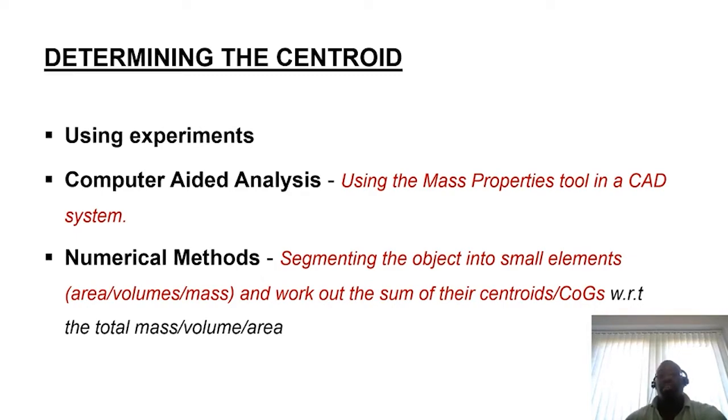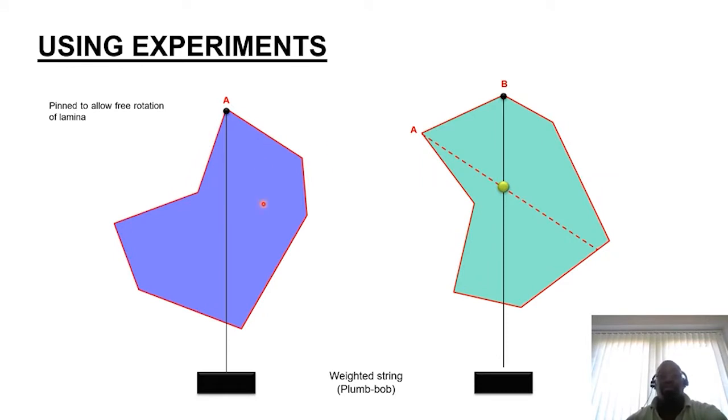So let's look at using experiments. The experiment is fairly simple for this laminar or 2D form. All that we have to do is pin a defined position, typically one corner. You can label that corner A or 1 or 2. You allow the shape to oscillate until it comes to rest. Once it comes to rest, you then place some form of loaded string, a plumb bob ideally, or a weighted string. You then trace along the string to give you one of the bisectors that will help you establish where the central position is likely to be.